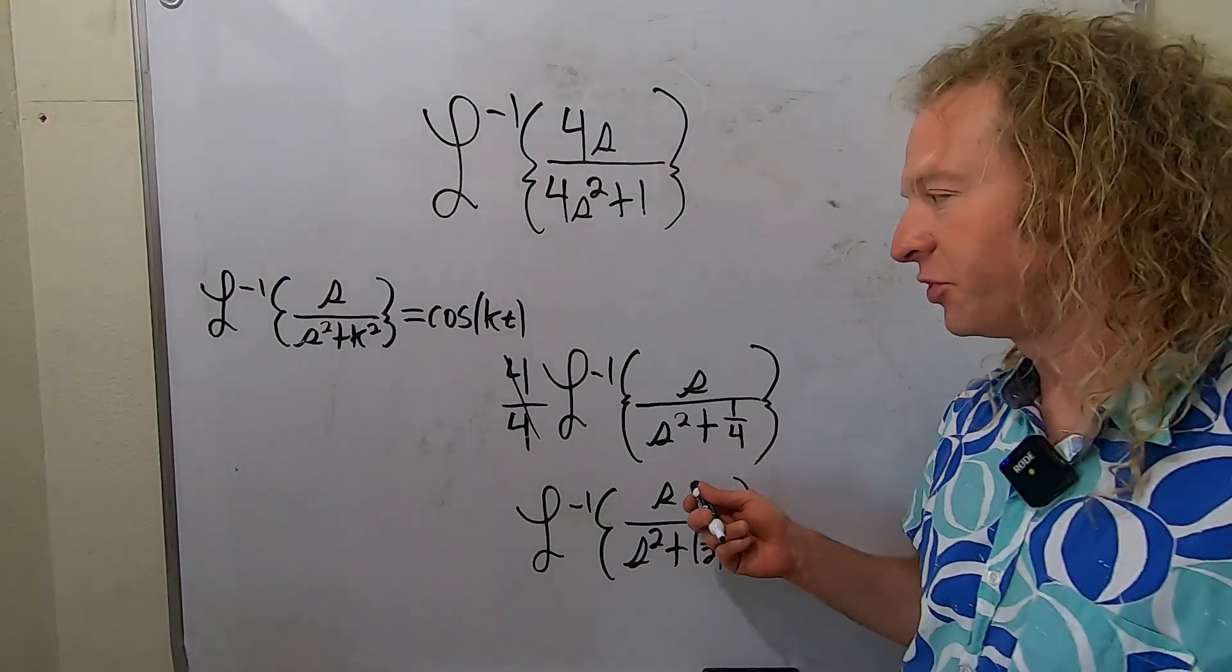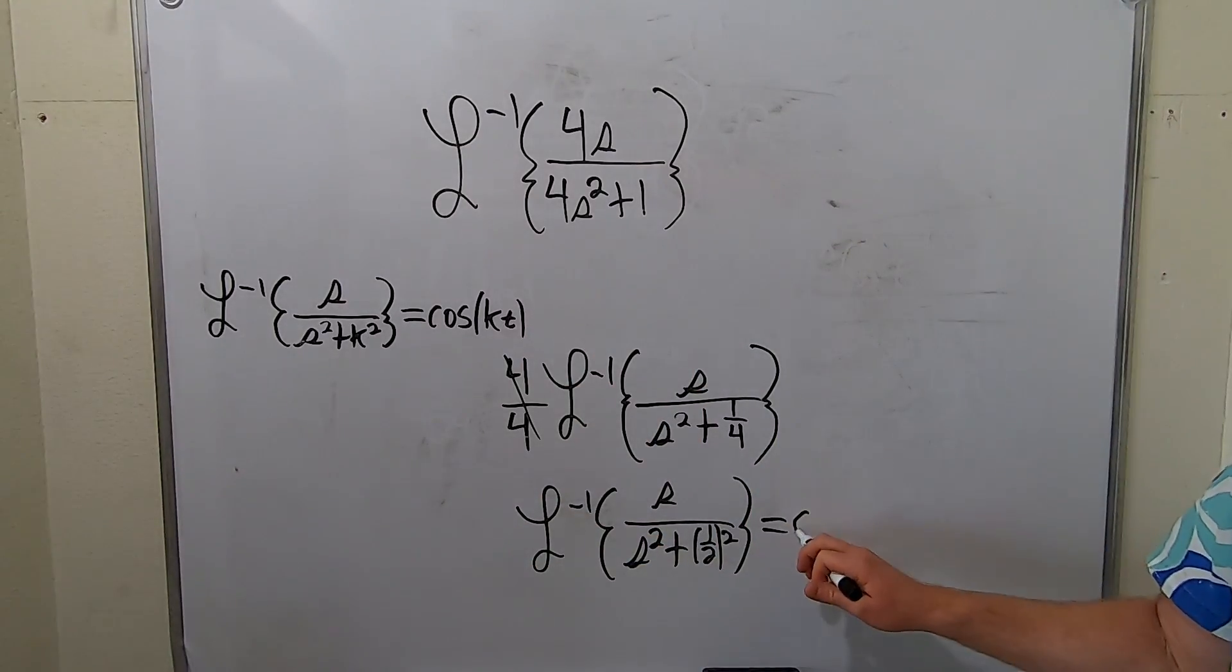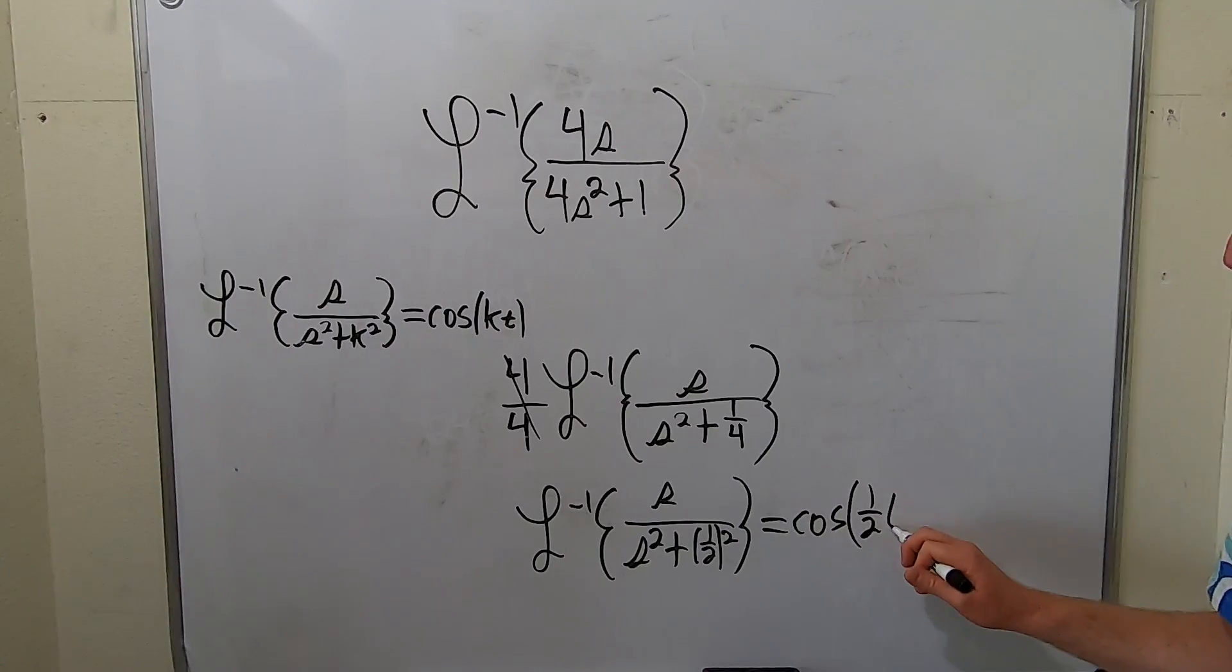And the cosine function has the s. So this is going to be cosine of kt, but k is 1 half. And that is the final answer.